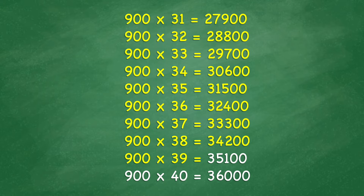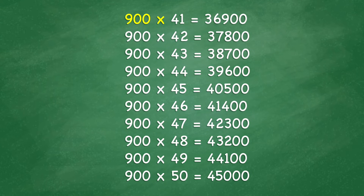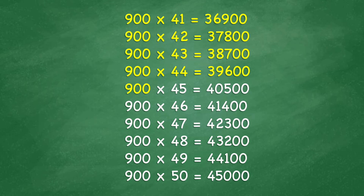900 times 40 equals 36,000. 900 times 41 equals 36,900. 900 times 42 equals 37,800. 900 times 43 equals 38,700. 900 times 44 equals 39,600. 900 times 45 equals 40,500. 900 times 46 equals 41,400. 900 times 47 equals 42,300.